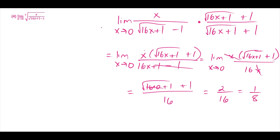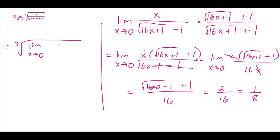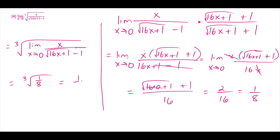To apply the theorem and close this out: the limit equals the cube root of the limit as x approaches 0 of x/(√(16x + 1) − 1). Because we found an exact limit of 1/8 and the cube root function is continuous at 1/8, we substitute in 1/8 directly. The cube root of 1/8 equals 1/2.